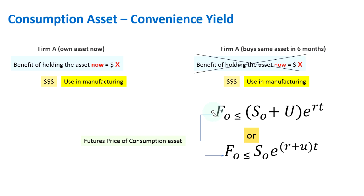If we look at the futures price of a consumption asset — let's say it's F naught — the futures price of a consumption asset will be less than or equal to the price you would calculate based on the formula used for an investment asset. The futures price of an investment asset is simply the spot price plus the present value of the storage cost, and then you take the exponent of the risk-free interest rate multiplied by time.